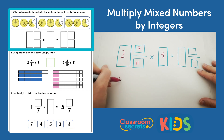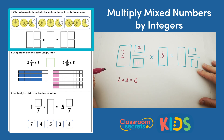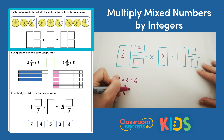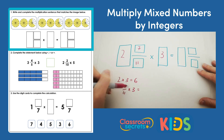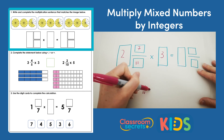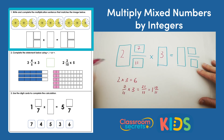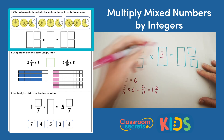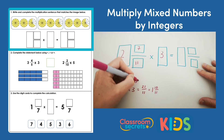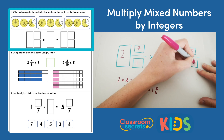The answer: if we do 2 times 3 we get 6 wholes. Then we need to do 7 elevenths times 3 to get the next part. 3 times 7 is 21 elevenths, so that is 1 and 10 elevenths. So the answer when we put these together is 7 and 10 elevenths.